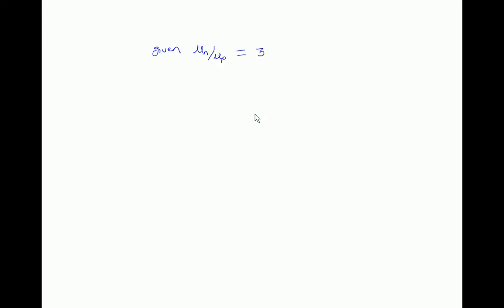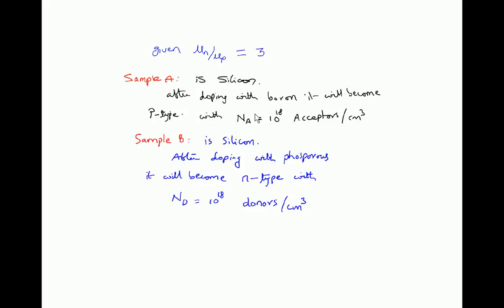Given that electron to hole mobility ratio is 3, i.e., μn/μp is 3. And sample A is given as silicon and after doping with boron it will become p-type. So sample A will become p-type with acceptor concentration as 10^18 boron atoms per cm³. Sample B is also silicon but it is doping with phosphorus. So after doping with phosphorus it will become n-type. So sample B will become n-type with donor concentration as 10^18 donors per cm³.